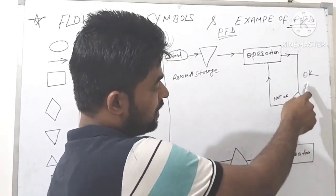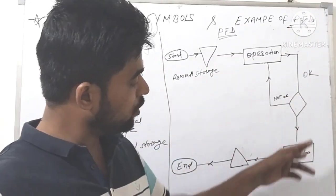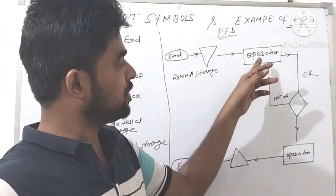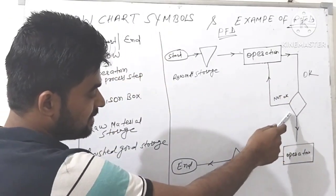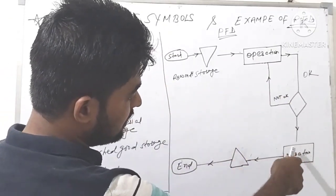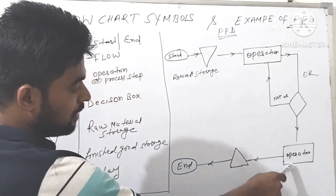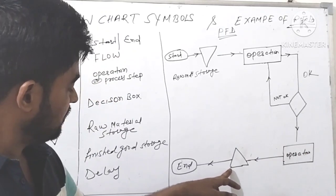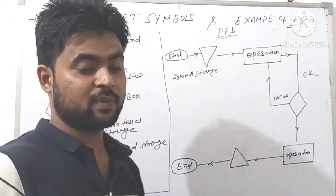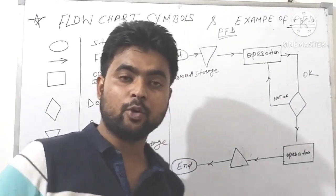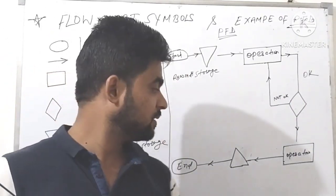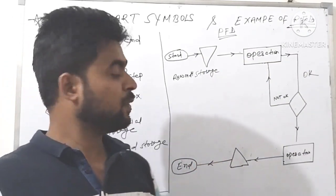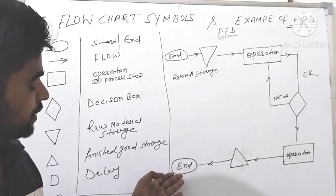This is a decision box. If the material is okay, the material will go to the next operation. If the material is not okay, then it will go back to the previous operation. After the material is confirmed okay, it goes to the next operation. And after completing all operations and completing your materials, you keep them in finished goods storage using the finished goods storage symbol.